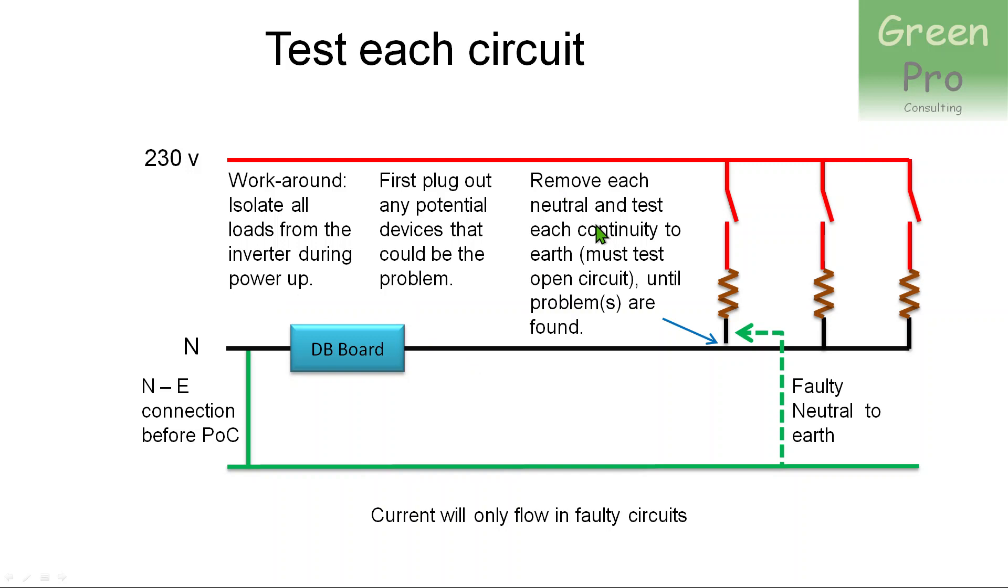Okay, if it's not one of those two, then you have to get a guy in that starts scratching in your DB board. And what you do is you remove each neutral circuit, so you keep the circuit off, and then you start testing for continuity between neutral and earth in that circuit. And if it's not, then you connect it back onto the neutral and you go through everything until you hopefully find the problem.